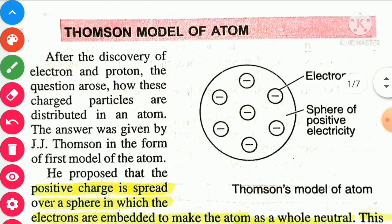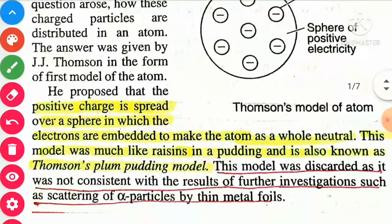He proposed that positive charge is spread over the sphere in which electrons are embedded to make the atom as a whole neutral. This model was much like raisins in pudding and is also known as Thomson's plum pudding model.